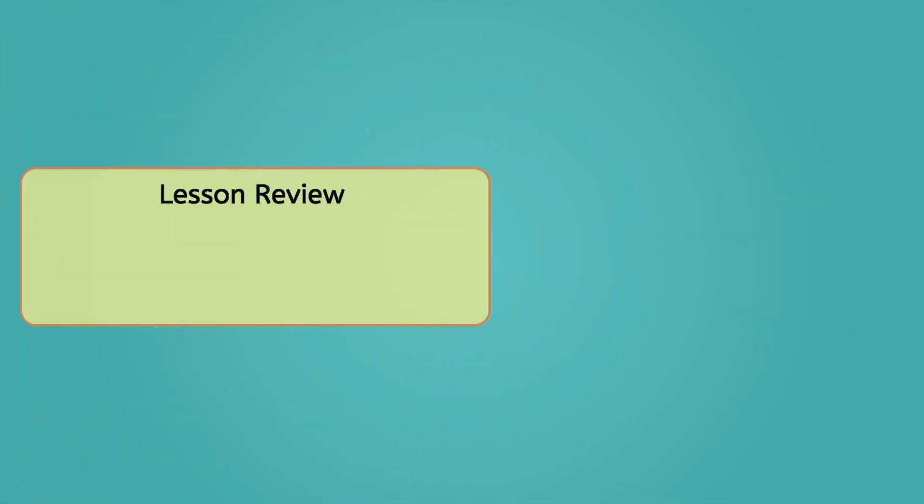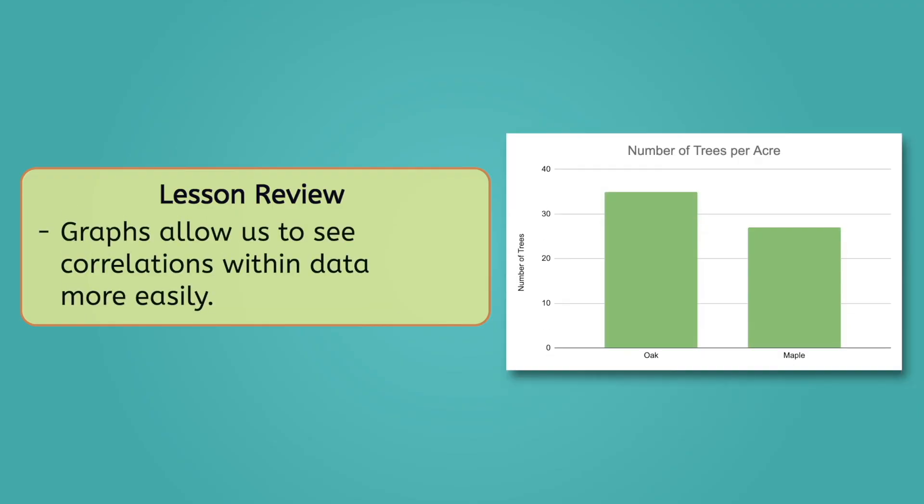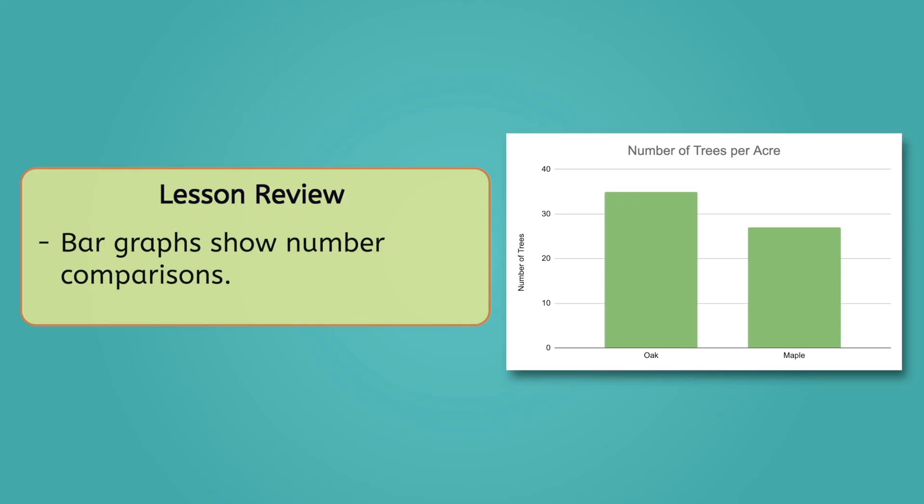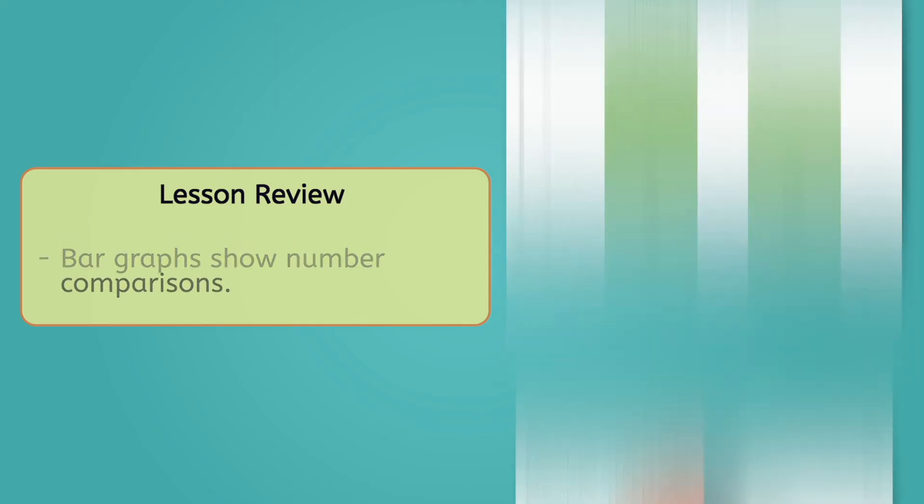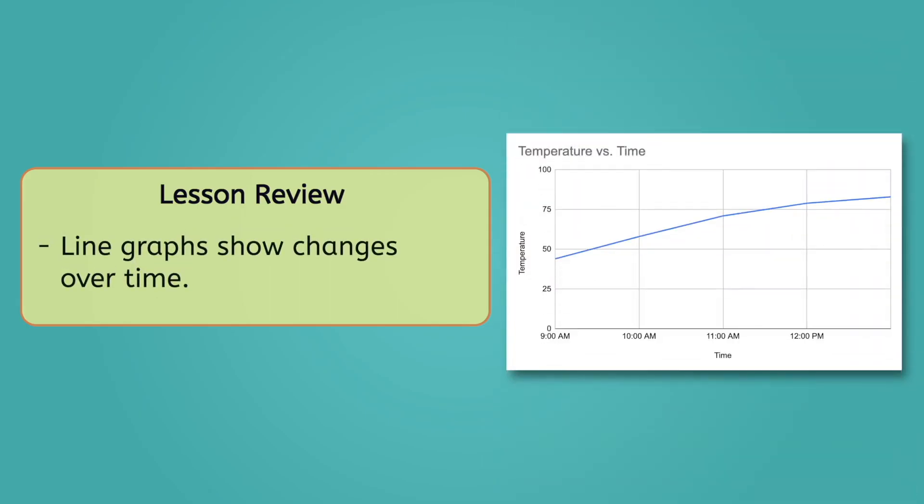And with that, we have covered the basics of organizing and analyzing data. To recap, journals and tables are extremely valuable tools for keeping track of data. Graphs assist with data analysis by allowing us to see possible correlations within data more easily. Finally, when choosing a type of graph, keep in mind that bar graphs show number comparisons, pie charts depict parts of a whole, and line graphs show changes over time.